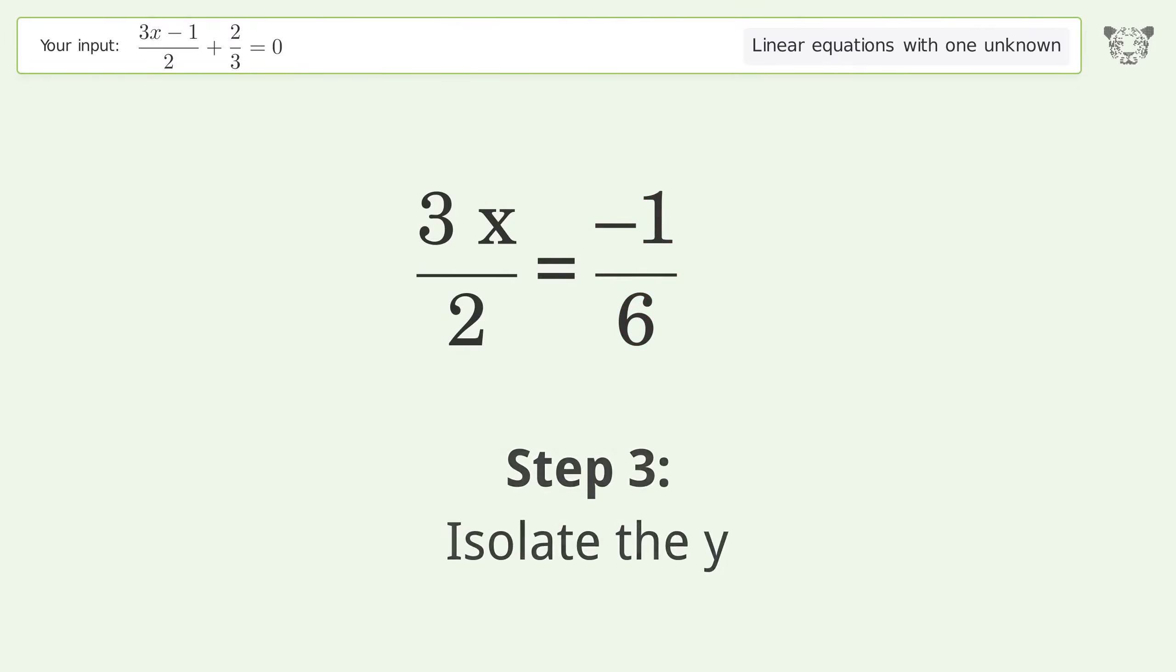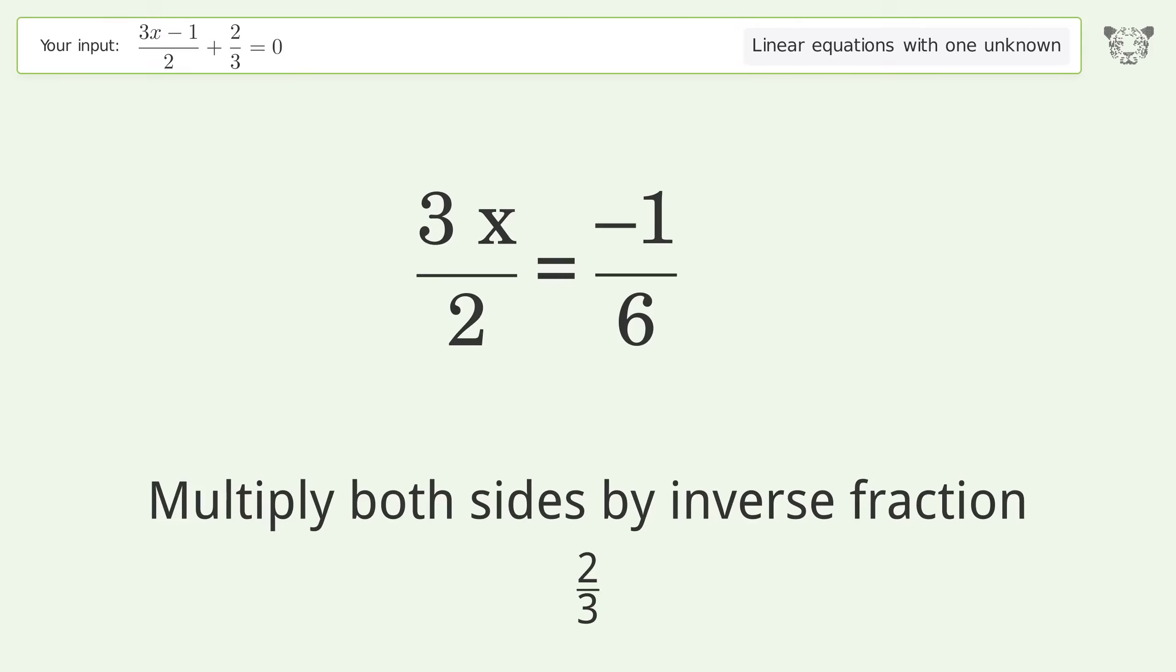Isolate the x. Multiply both sides by inverse fraction 2 over 3.